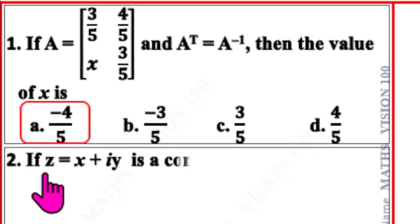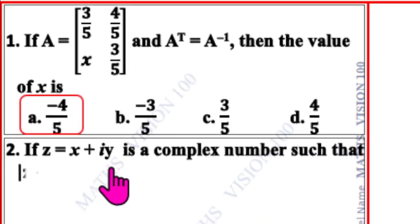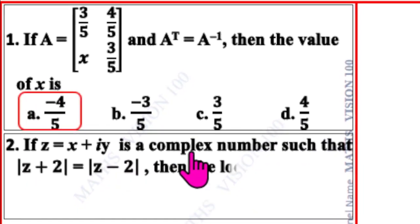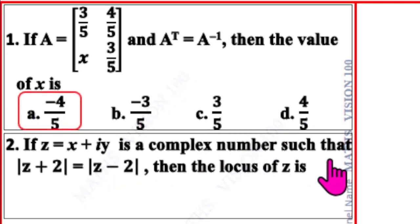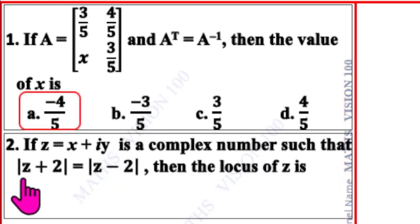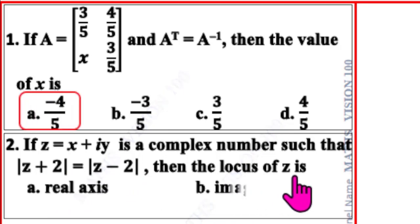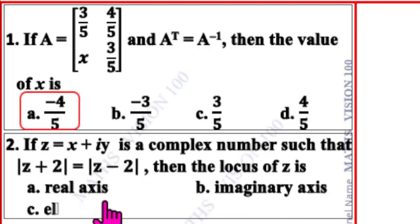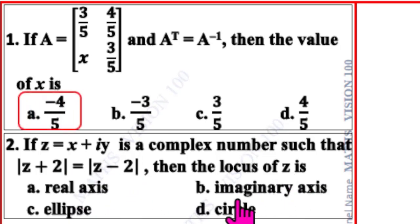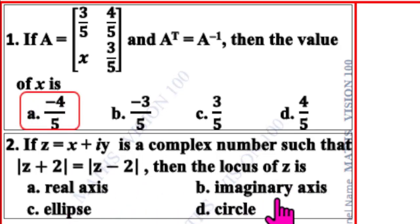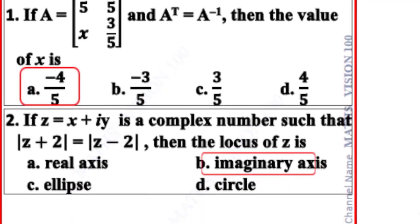Second question. If Z is equal to x plus iY, a complex number such that modulus of Z plus 2 equal to modulus of Z minus 2, then the locus of Z is — four options are given. The correct option is B: imaginary axis.